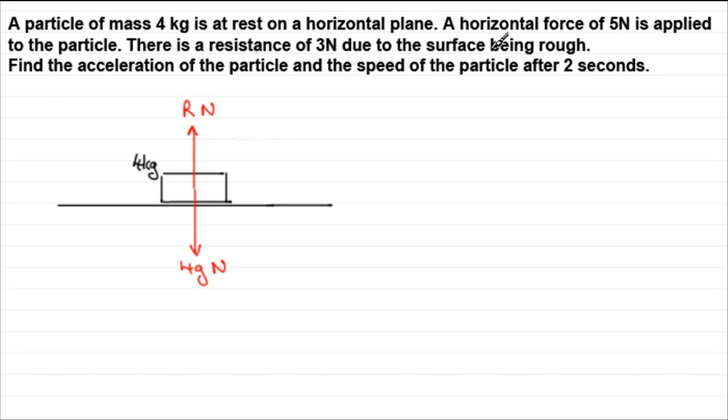Now we've got a horizontal force of 5 newtons applied to the particle. Let's say we have that going that way, 5 newtons. You'll notice I've got these all coming from a point here because we've got to consider this as a particle. We've also got this resistive force of 3 newtons due to the surface being rough. If you're pushing with 5 newtons to the right, the particle will move to the right, and resistance always opposes motion. So that's going to act in the opposite direction, and that is 3 newtons.